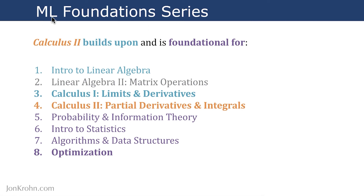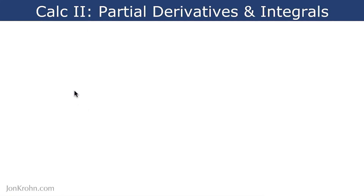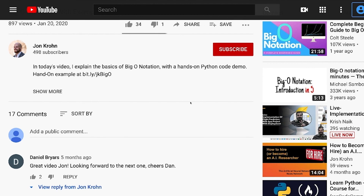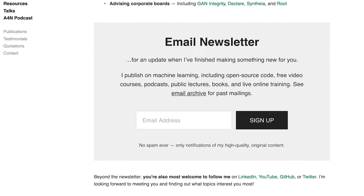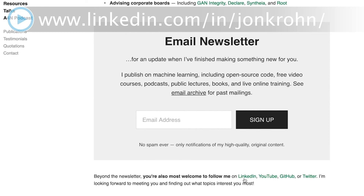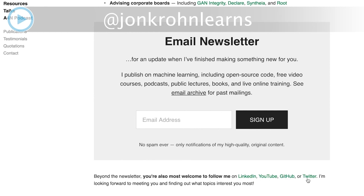As a quick reminder about where we are in my Machine Learning Foundation series: we are working our way through this Calculus 2 subject, the fourth subject in the series, and we're getting near the end of it. We've already finished our review of introductory calculus — that was the first segment. We are right now wrapping up segment two on machine learning gradients. And coming up next is the third and final segment in the subject on integrals. See you there. To be sure not to miss the next video in this series, subscribe to my channel. Thanks for taking part in this tutorial — I hope you enjoyed it. If you did, please like and comment. Head to johncrone.com and sign up for my email newsletter. You're also welcome to add me on LinkedIn — simply mention that you're a viewer of the Machine Learning Foundation series. And finally, you can follow me on Twitter too if that's your social medium of choice.